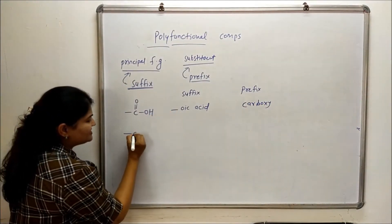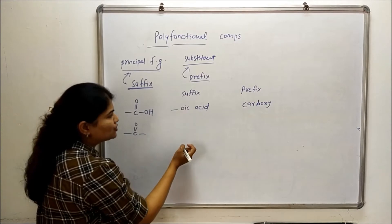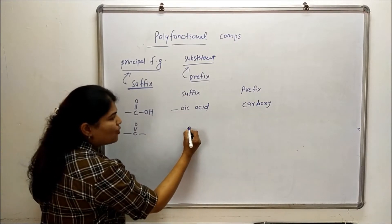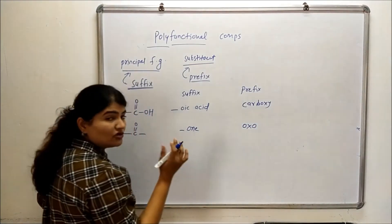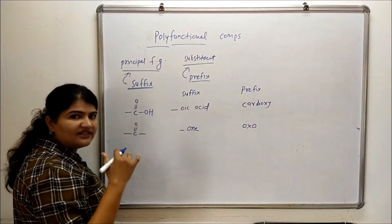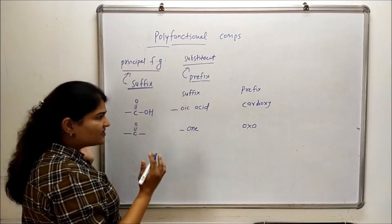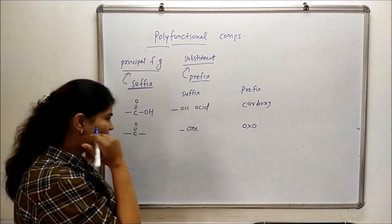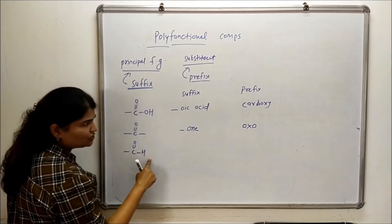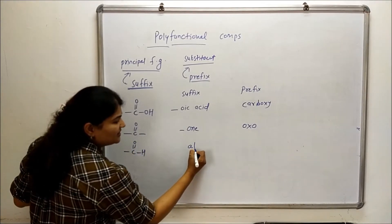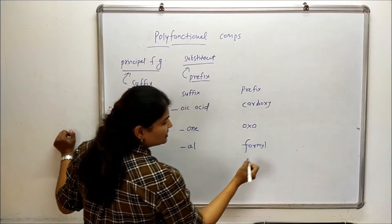Second example: let's talk about ketone. When we use ketone as a parent group, we will use the suffix -one, and if we have to use it as a prefix, we will use oxo. Then let's talk about aldehyde — the suffix will be -al and the prefix will be formyl.